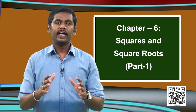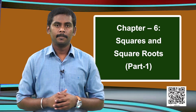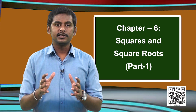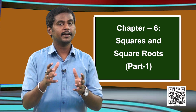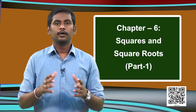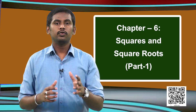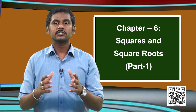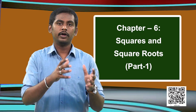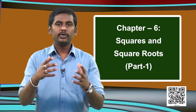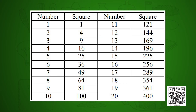We have seen what square numbers are. Now let us try to observe some of the properties related to these square numbers. Let us observe the squares starting from 1 to 20, and try to identify some of the properties. We have a column containing all the numbers and another column containing their squares.